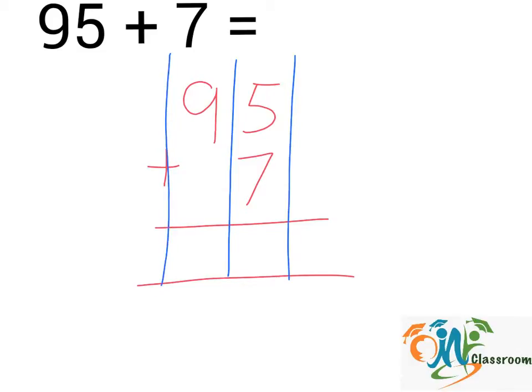Now we will add up the numbers in each column from right to left. 5 plus 7. This will give us 12.